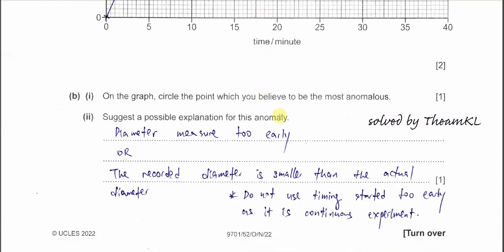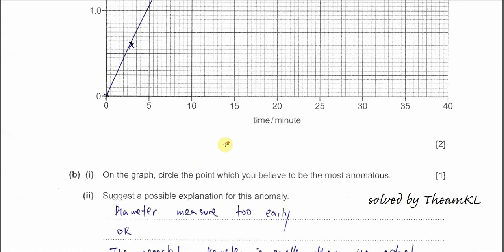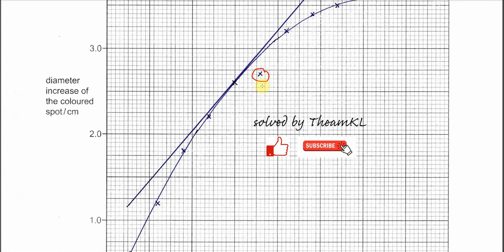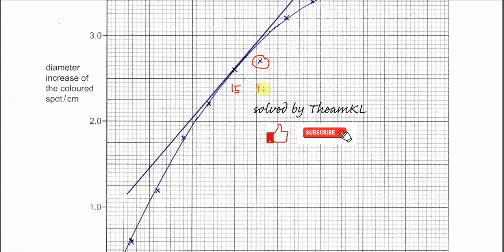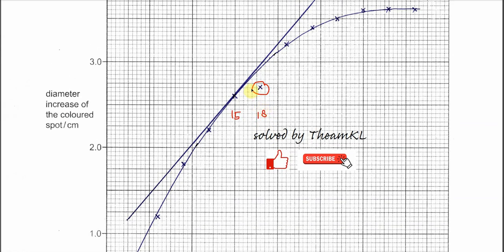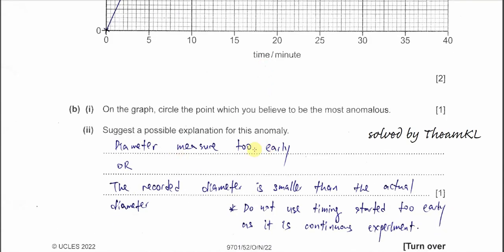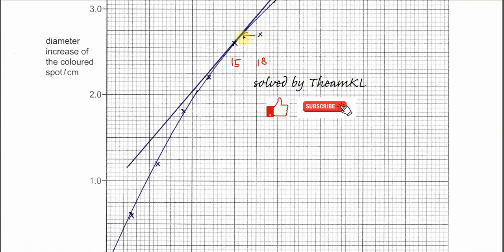Suggest a possible explanation for this abnormality. There are two directions. The first one: diameter measured too early. From here we can see that the value is actually quite close to 15 minutes. So it's telling us that the student actually measured the diameter before 18 minutes, that's why you get this answer: diameter measured too early because this value actually belongs to the earlier one.